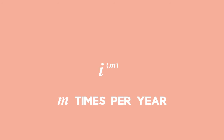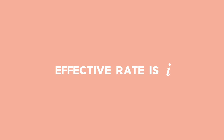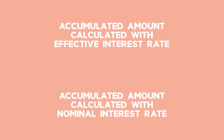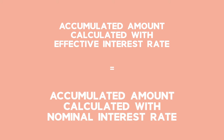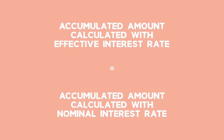And given an effective interest rate I, the accumulated amount calculated using either interest rate will be equal. Using the formula of the accumulated amount for your effective interest rate and your nominal interest rate,